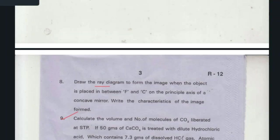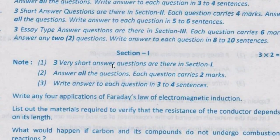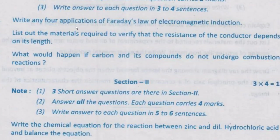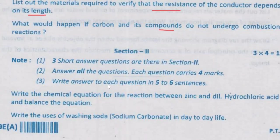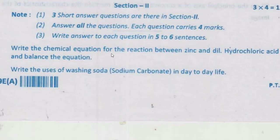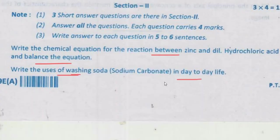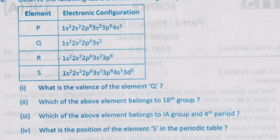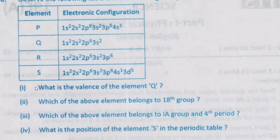Moving on to the next question paper. Write any four applications of Faraday's law of electromagnetic induction. List the materials required to verify that the resistance of the conductor depends on its length. What would happen if carbon and its compounds do not undergo combustion reaction? Section 2: Write the chemical equation for the reaction between zinc and dilute hydrochloric acid and balance the equation. Write the uses of washing soda in day-to-day life. Observe the following table — four questions about it. Make a note.